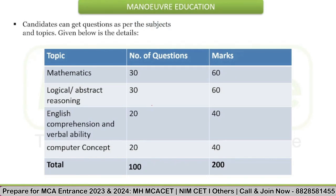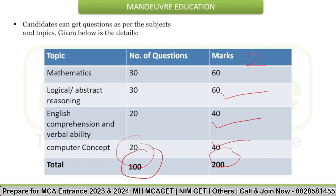Now let's discuss the paper pattern in detail. There will be 30 questions from Maths carrying 60 marks, 30 questions from Logic carrying 60 marks, 20 questions from English Comprehension and Verbal Ability carrying 40 marks, and 20 questions from Computer Concepts carrying 40 marks. Each question carries 2 marks, making a total of 200 marks with 100 total questions.